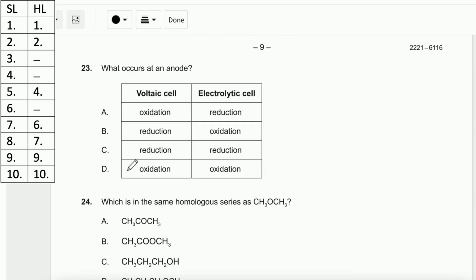Number 23. What occurs at an anode? You need to remember anode-oxidation, cathode-reduction. Both are the same for voltaic and electrolytic cells. Therefore, the answer is D - oxidation occurs at the anode in both voltaic and electrolytic cells.